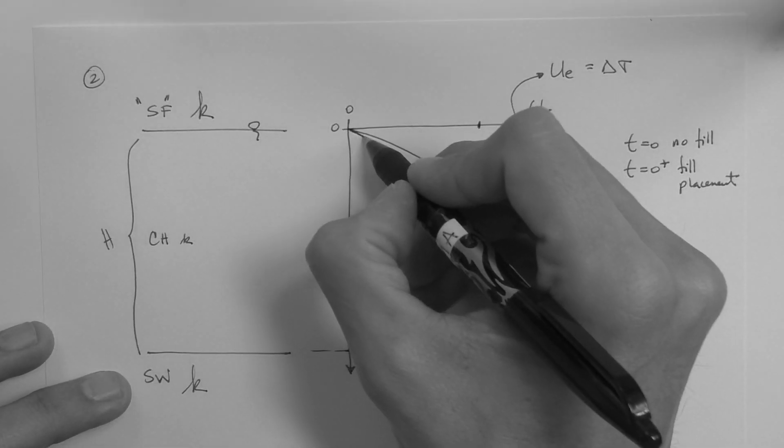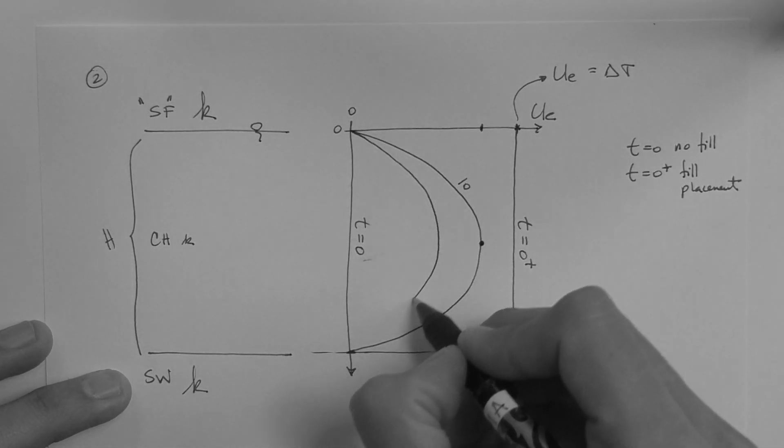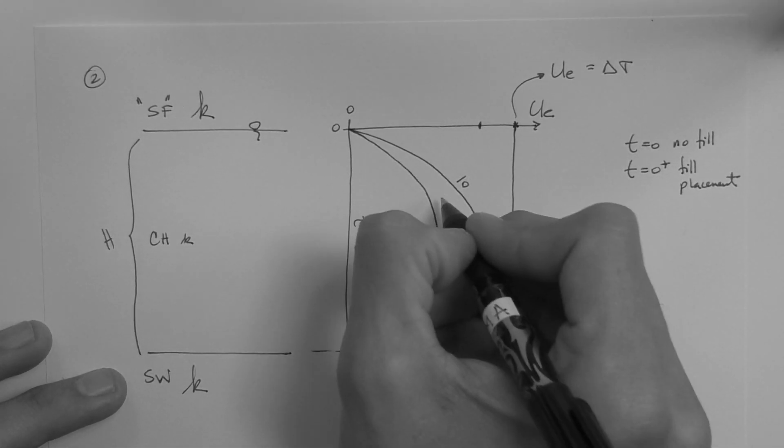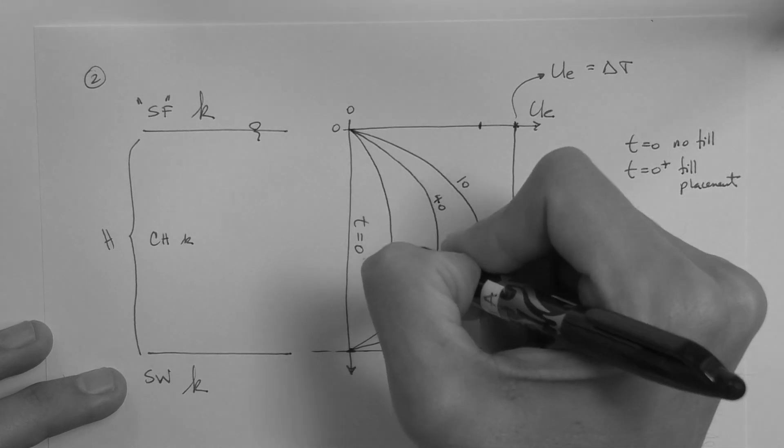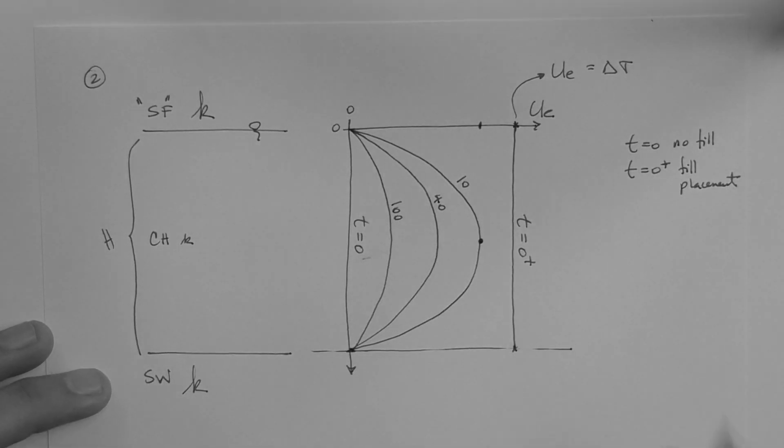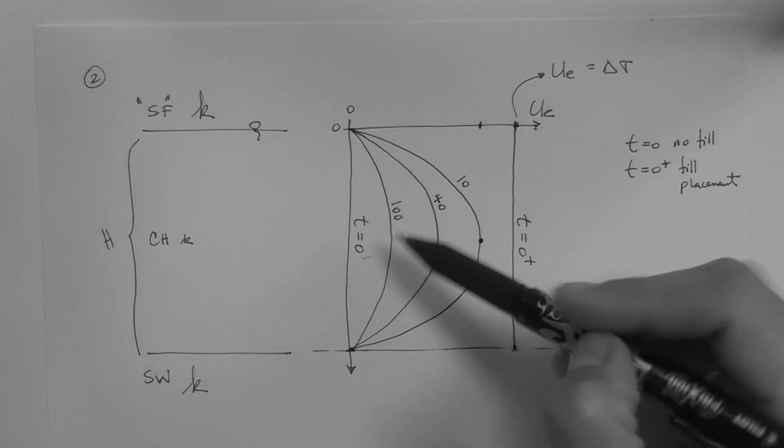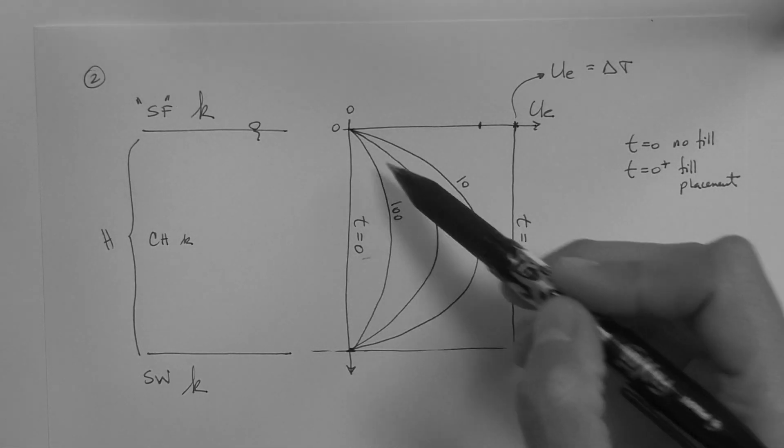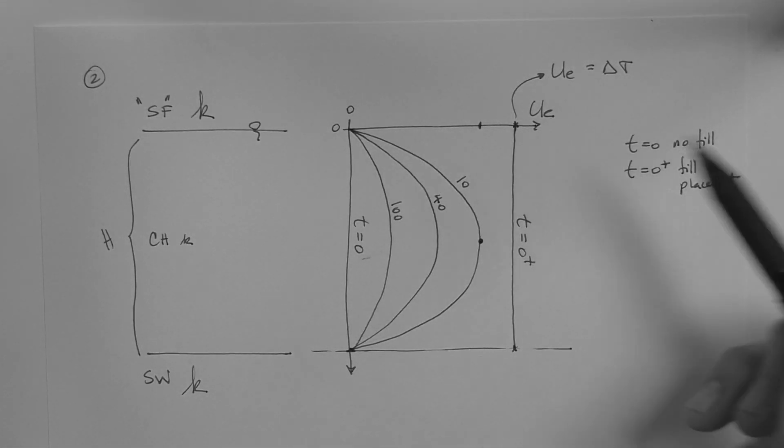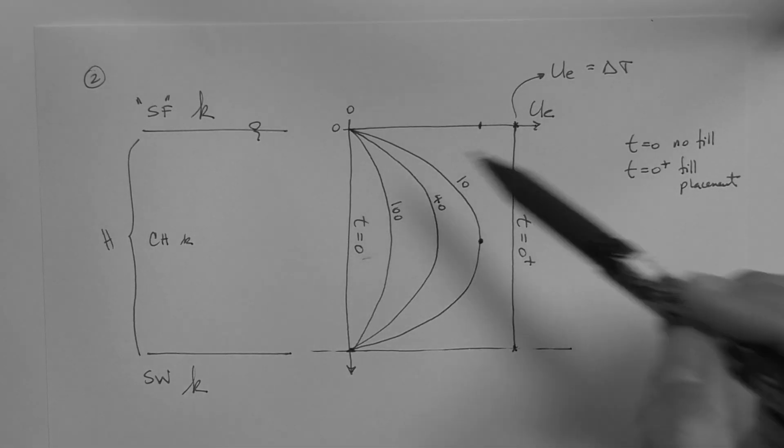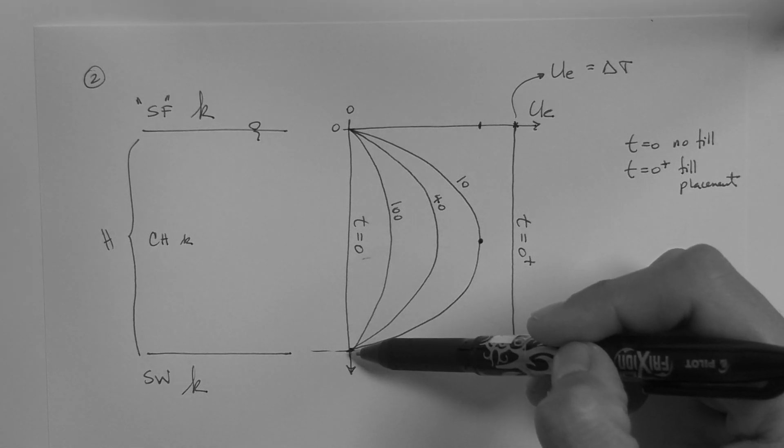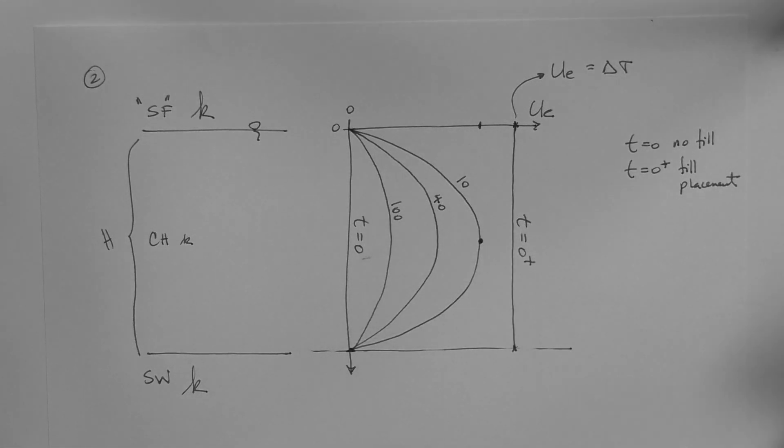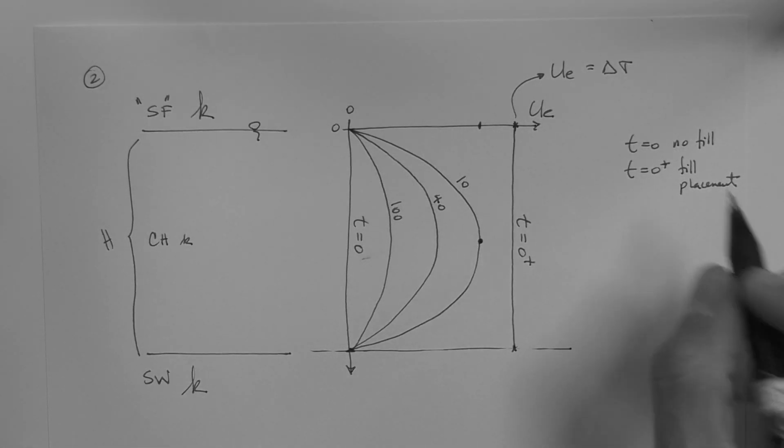And so, as time progresses, the excess pore pressure dissipates. That is, it reduces. Let's say this is 40 days, and then maybe a hundred days over here. At the end of consolidation, the isochrone, these curves are called isochrones of time, at the end of consolidation, the isochrone rests on this line, on the axis. Time equals end of consolidation, in which case, obviously, the excess pore pressure is zero throughout the layer.